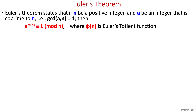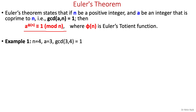Euler's theorem states that if n is a positive integer and a is an integer co-prime to n — meaning their GCD is 1 — then we can write their relationship as a to the power phi(n) is congruent to 1 mod n, where phi(n) is Euler's Totient function, which we already know.